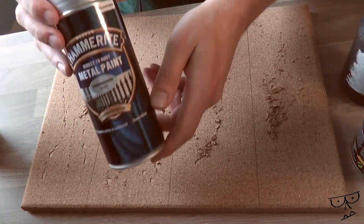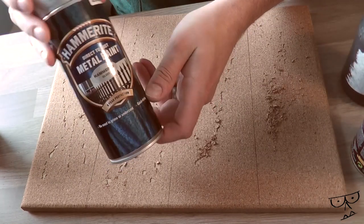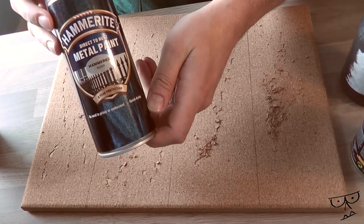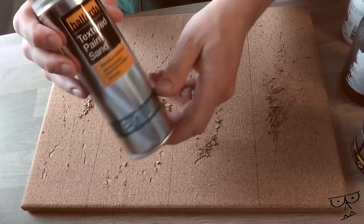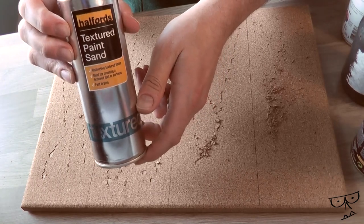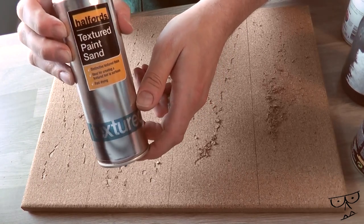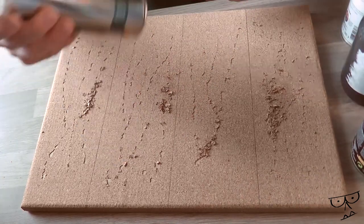I've then got this Hammerite metal paint which gives it that kind of stippled effect like tarmac. So I'm interested to see how that will look on the surface. And I've got textured sand as well. So I'm going to see what that looks like because that might look nice for like a sand-covered desert road. We'll see how that comes out.